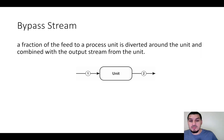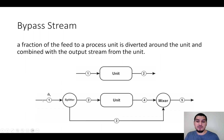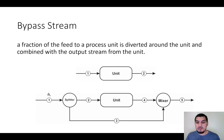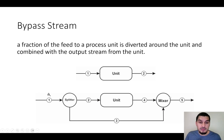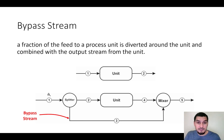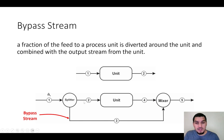To avoid this problem, we redesign the process by adding a splitter. Part of the flow — 100 kilograms per hour — goes to the process unit, and the extra amount is diverted around the unit. This diverted portion is the bypass stream. It's combined with the output from the unit using a mixer. This is what we call the bypass stream, and it's common in many cases. That's all for this video.